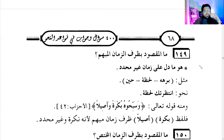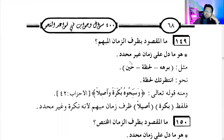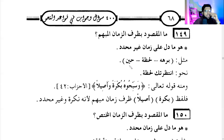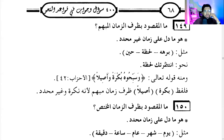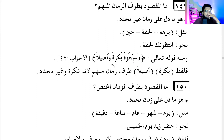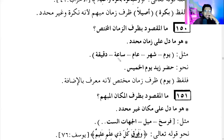There is something called zarful zaman which is mubham (unspecified) and muqayyad/mukhtas (specific). Unspecified time indicates a time which is not specific, like burha (long time), lahza (a moment), hina (whenever/when). Specific time is like yesterday, today, yaum (a day), shahr (one month ago), 'aam (one year), daqiqa (one minute) — these are specific times that can be identified.